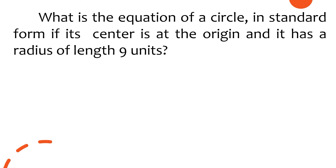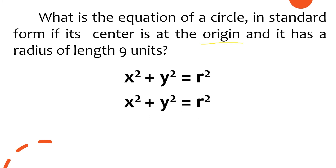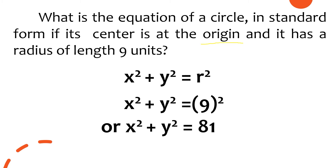Next situation: what is the equation of a circle in standard form if its center is at the origin and it has a radius of 9 units? Since the center is at the origin, we again use x² + y² = r². Substituting r = 9 gives x² + y² = 9², or simplified: x² + y² = 81.